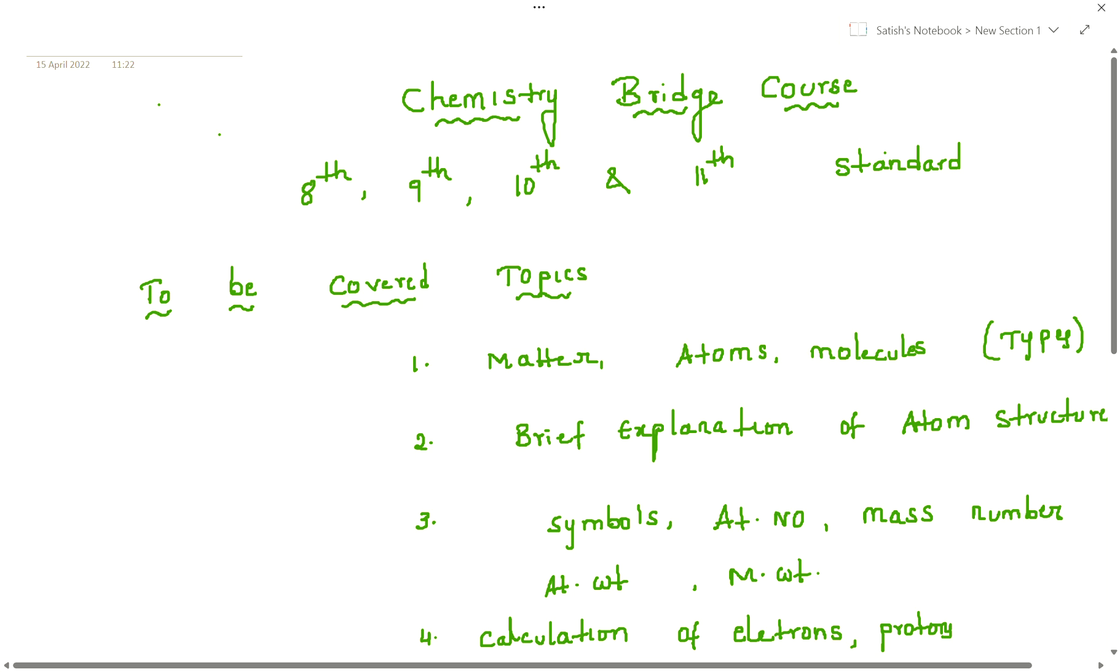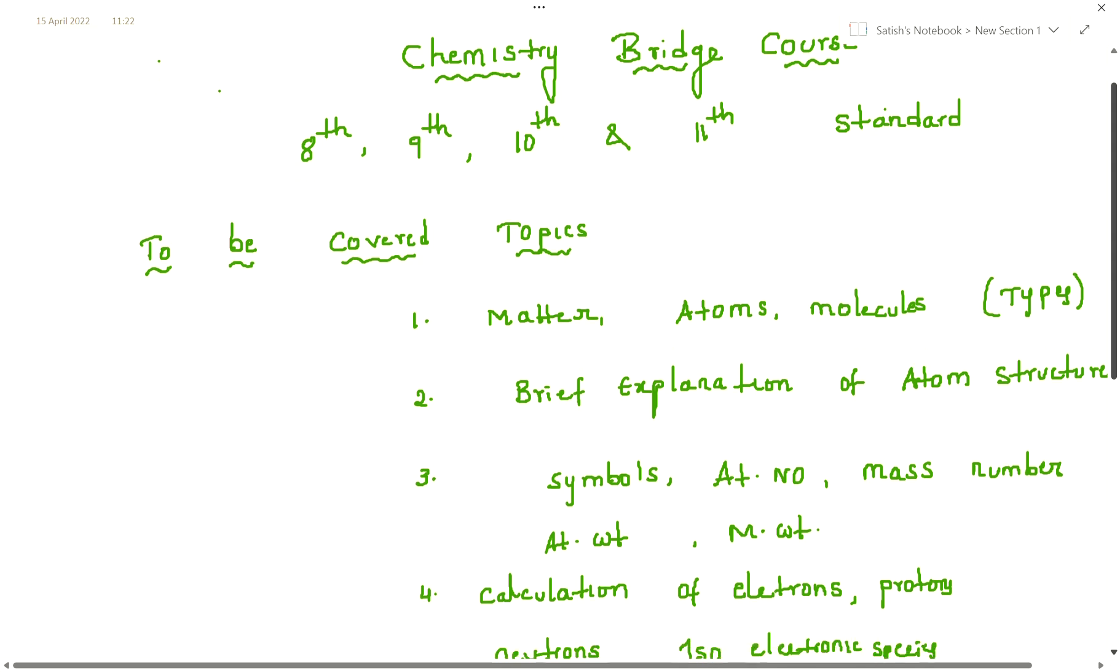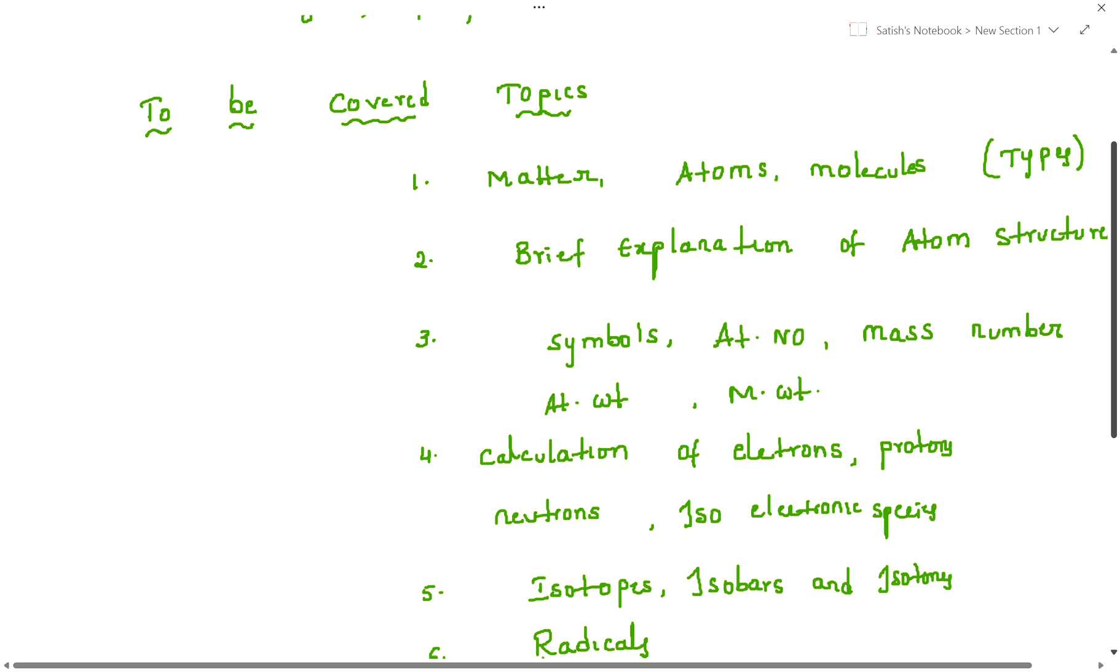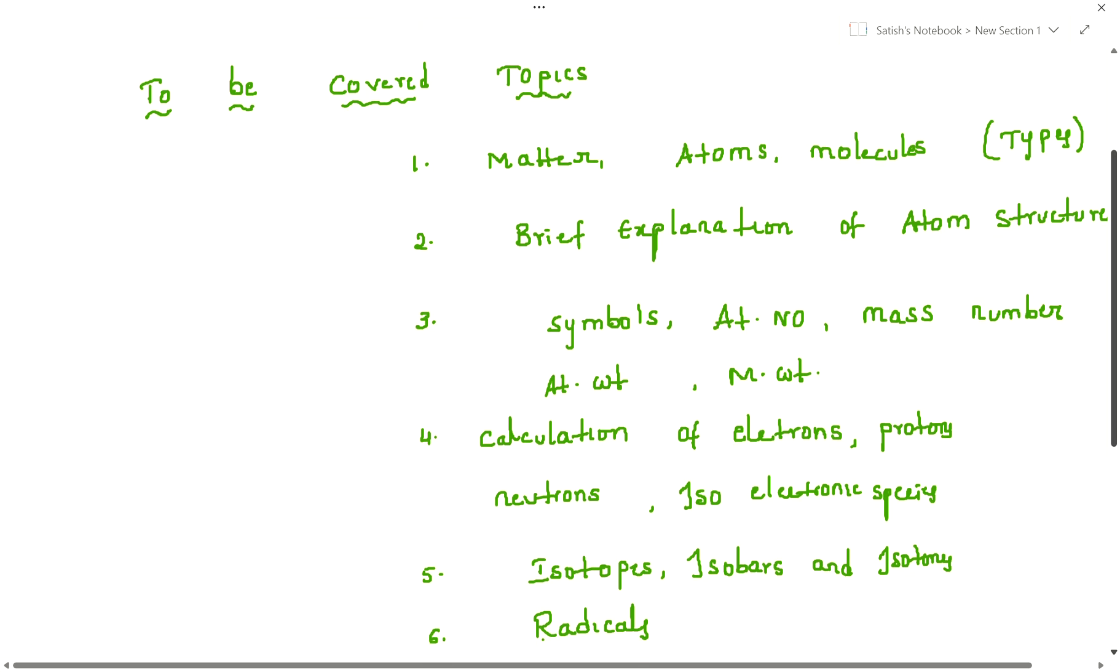In the fourth video, I am going to teach calculation of electrons, protons, neutrons, and isoelectronic species. The fifth topic in our bridge course is isotopes, isobars, and isotones, including examples and how they ask questions in competitive exams.